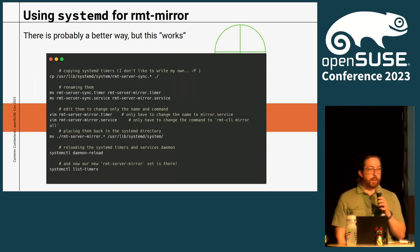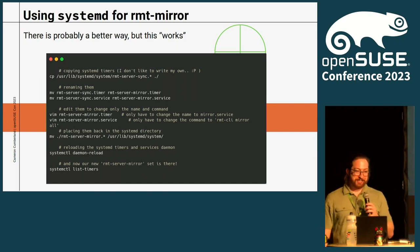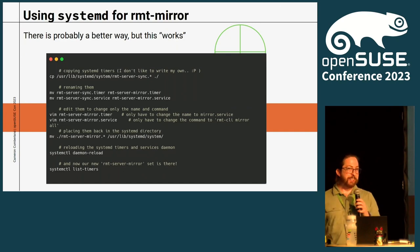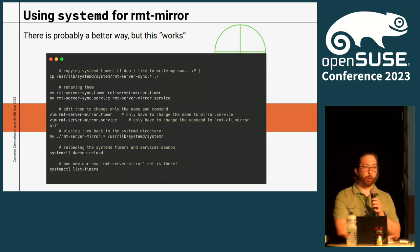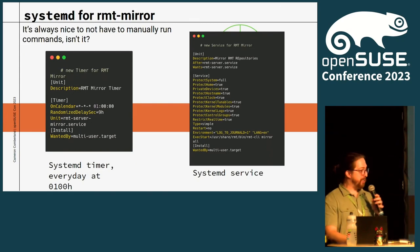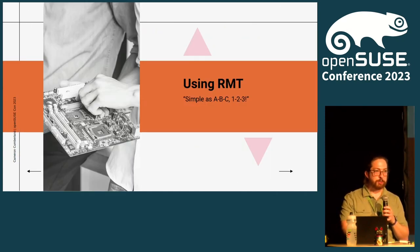I create my own systemd service to mirror the Tumbleweed repositories, because I don't want to have to do this manually. I have it run every five to seven hours depending on how I feel. I just copy the system sync timer and the service over, then modify them accordingly. I have no idea if this is recommended — if it's a horrible idea, someone please tell me afterwards. These will all be put online on GitHub as well, just because there's nothing really out there for custom RMT setups, so I figured I'll do my part.